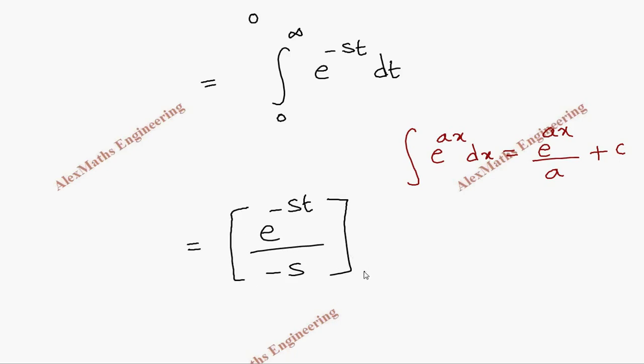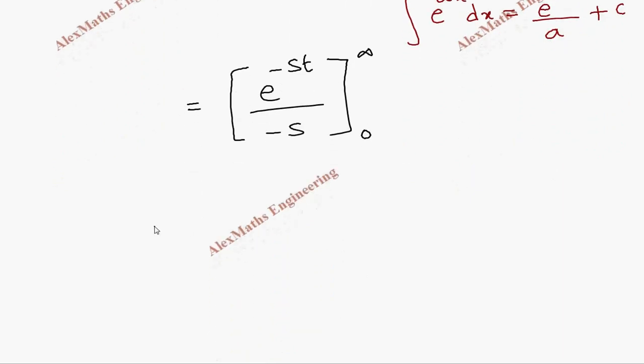Now I have to substitute the upper limit, so in place of t I have to put upper limit infinity, then minus I have to substitute the lower limit which is 0 in place of t.